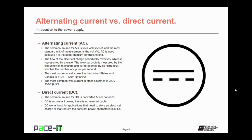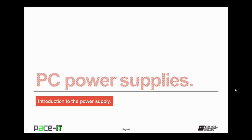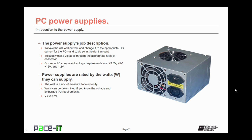Computers require DC current. Now let's talk about the PC power supply. Its job is to take the AC wall current and change it to the appropriate direct current that the PC requires, and it needs to do so in the right amount. Not only does it need to supply the correct amount of DC current, but it also needs to supply it through the appropriate style of connector.